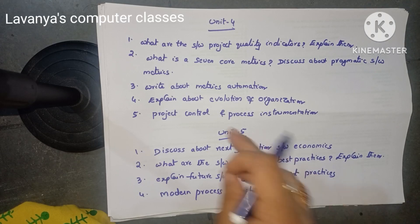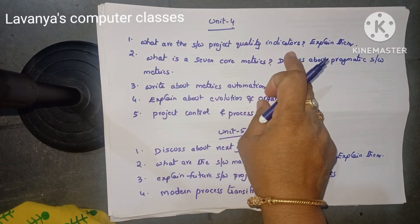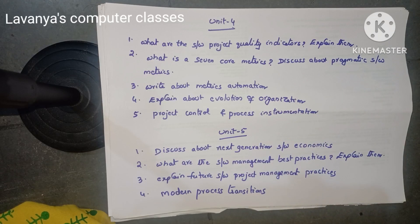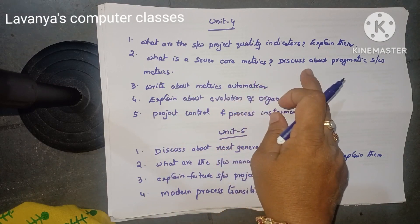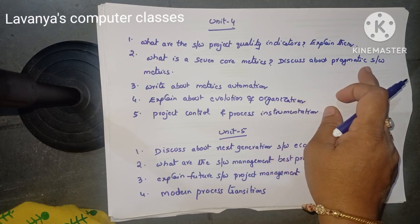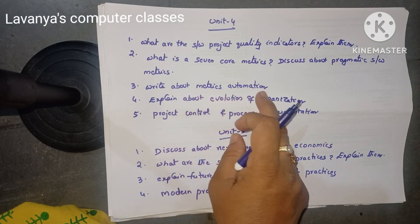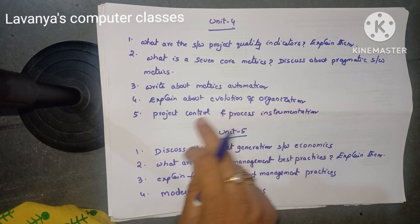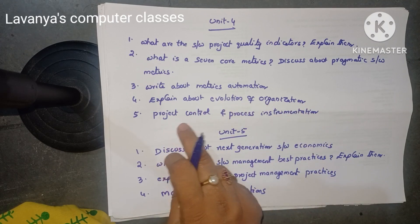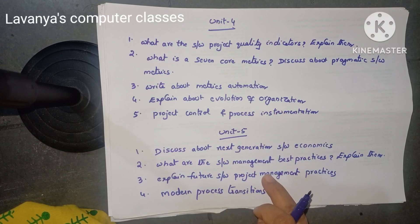Unit 4 important questions: what are the software project quality indicators? Explain them — important question. Next: what is a 7 core matrix? Discuss about pragmatic software metrics. Next: write about metrics automation. Explain about evaluation of organization and explain about project control and process instrumentations. These are the important questions in Unit 4.